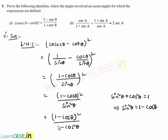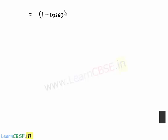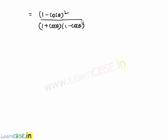Here, 1 minus cos square theta can be written as 1 square minus cos square theta, which is in the form of a square minus b square, and can be written as a plus b into a minus b. Therefore, that will be equal to 1 minus cos theta whole square divided by 1 plus cos theta into 1 minus cos theta, on splitting the 1 minus cos square theta.